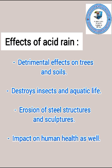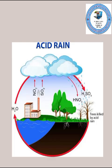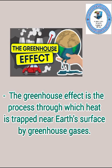Effects of acid rain include damage to trees, soils, insects, and aquatic life, as well as erosion of steel structures. You can see the whole process of acid rain in the diagram.